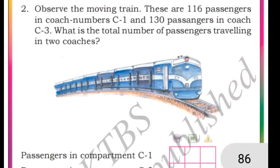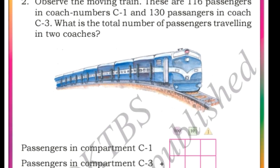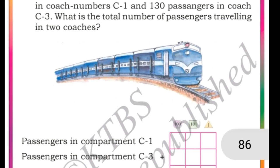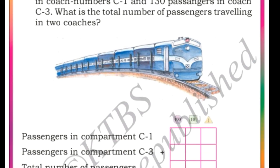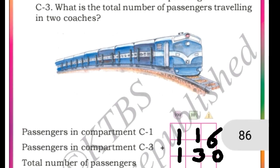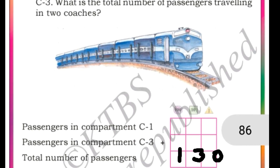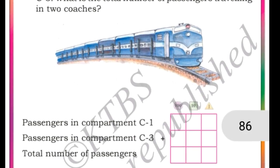Second question: observe the moving train. There are 106 passengers in coach 1 and 130 passengers in coach 3. What is the total number of passengers travelling in the 2 coaches? 6 plus 0 is 6, 1 plus 3 is 4, 1 plus 1 is 2 — the answer is 246. We should always count from the units place.